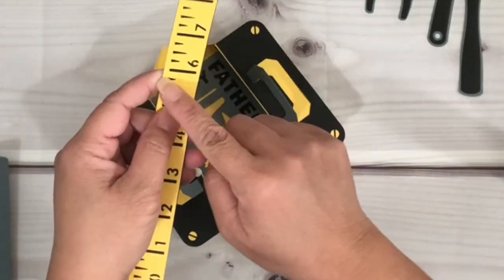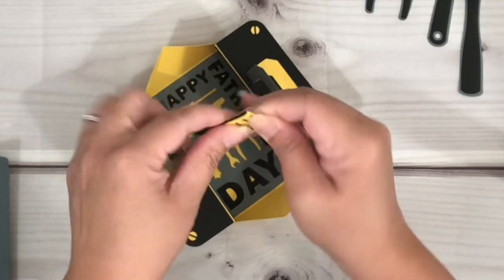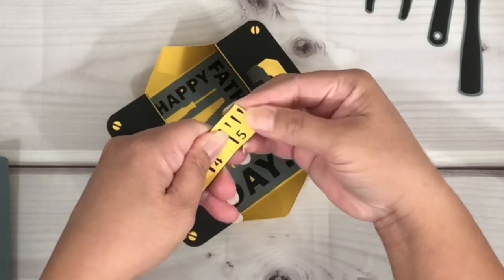For the ruler part, you will see that there is a score line, so just go ahead and bend the cardstock and then fold.